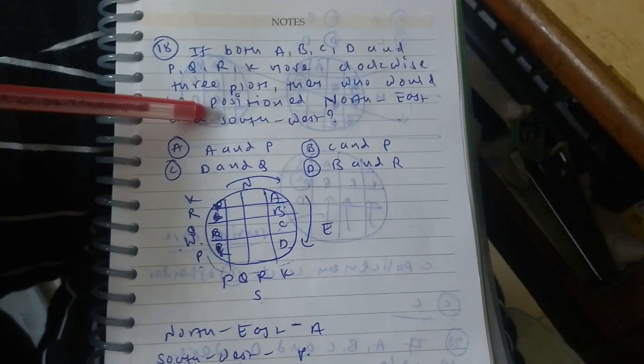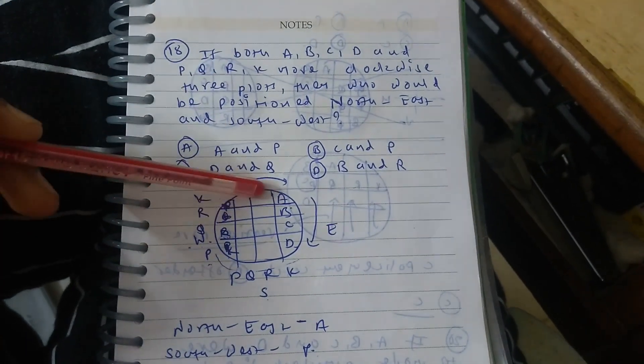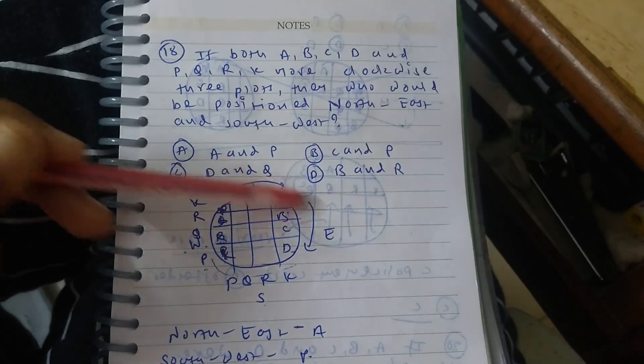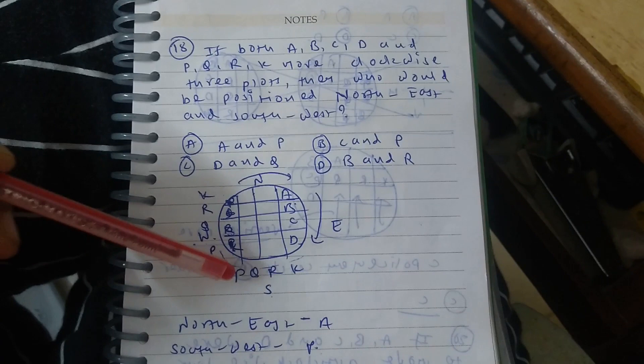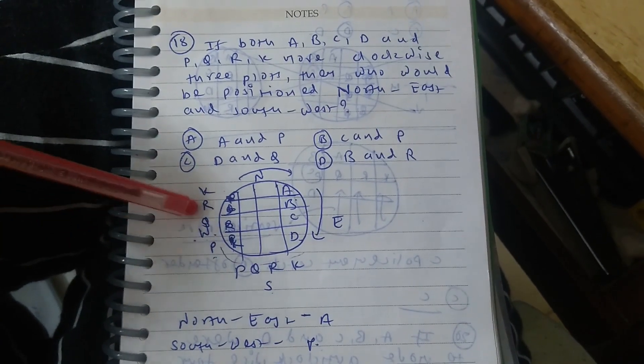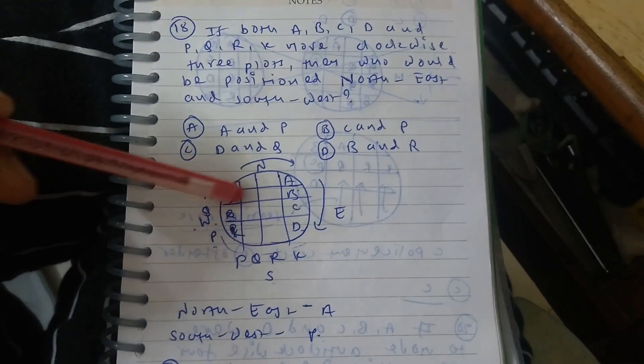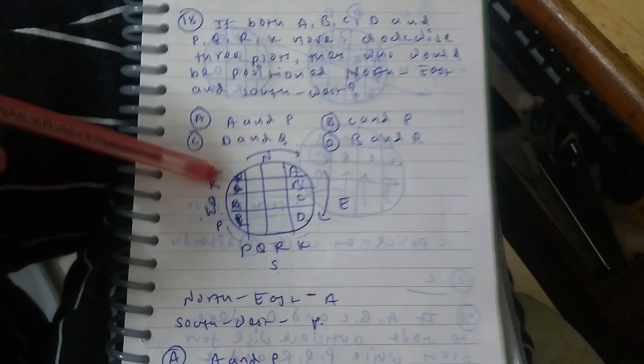then who would be positioned in the north-east and south-west direction? So here is the actual scenario, that is A, B, C, D are moving clockwise direction, and offenders P, Q, R, K are also moving from their actual position to clockwise direction by skipping three plots.